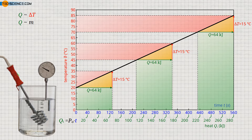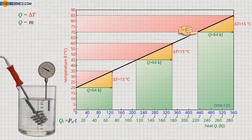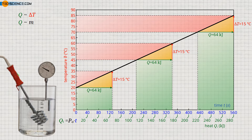We now see that, for example, the same amount of energy of 64 kilojoules has to be supplied for a temperature increase from 20 to 35 degrees Celsius as for the temperature increase from 45 to 60 degrees Celsius. The same amount of heat of 64 kilojoules must also be supplied for heating from 70 to 85 degrees Celsius. Thus, for liquid water, the temperature itself has no effect on the amount of heat that must be absorbed to cause a certain temperature change.